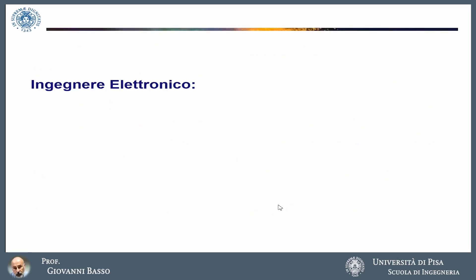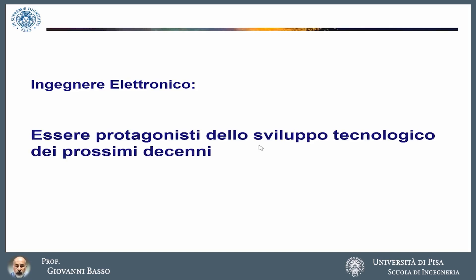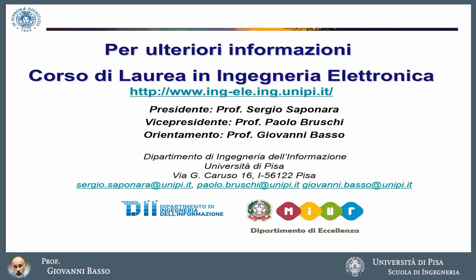In this presentation I have told you how the training of an electronic engineer happens and what are the fields in which an electronic engineer typically does his activities. We have seen that from the beginning, the applications of electronics have concerned the most advanced fields of technology — telephone networks and radio communications at the beginning of the 20th century. Consider that the revolution constituted by the internet would not have been possible without the support of electronic devices and systems. Something like that will also happen in the next decades, so we can say that becoming an electronic engineer today means being a protagonist of the technological development of the next decades. For further information on the electronic engineering degree course, you can refer to the president or vice president of the course or to the delegate for orientation. Thank you for your attention and good luck for the choice of your university path.